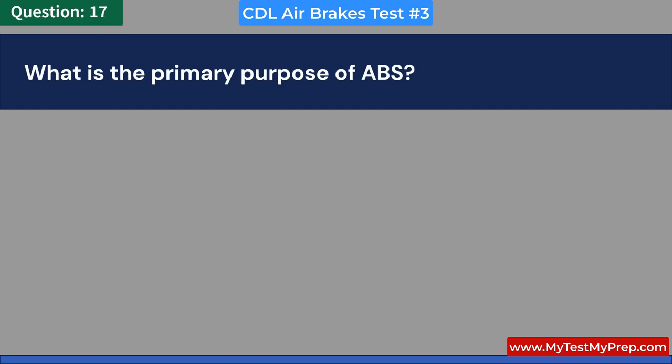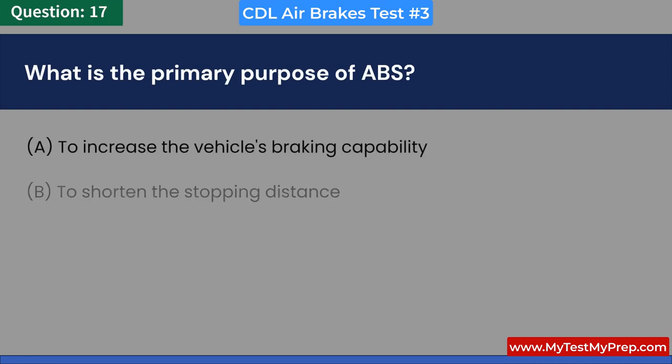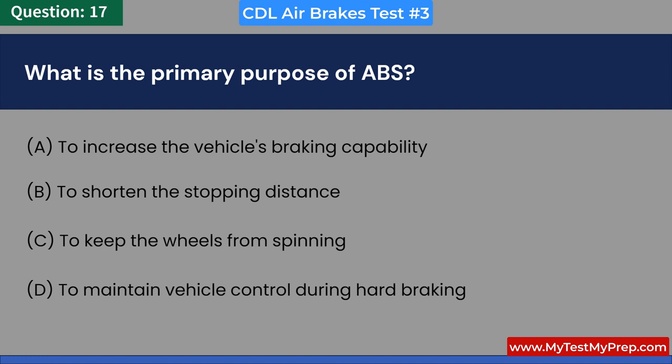What is the primary purpose of ABS? A. To increase the vehicle's braking capability. B. To shorten the stopping distance. C. To keep the wheels from spinning. D. To maintain vehicle control during hard braking. Answer: D. To maintain vehicle control during hard braking.